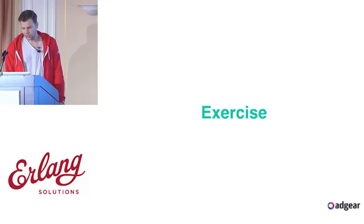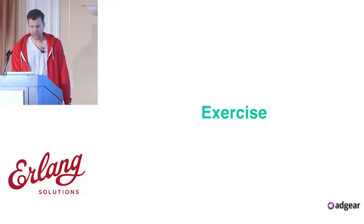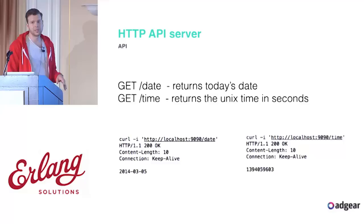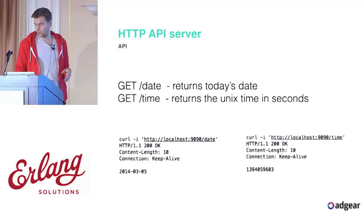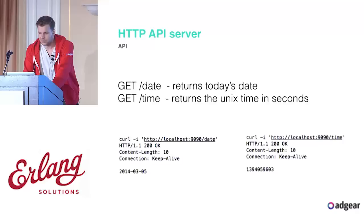We're going to start by getting a little dirty and digging into code directly. We're going to do a little exercise. It's pretty simple — we're going to try to build an HTTP server that returns the date and the time. It's a simple API, but we're going to be able to see a couple of different patterns while building this.